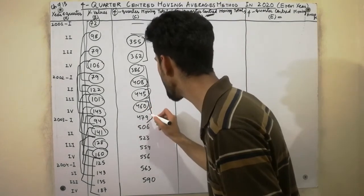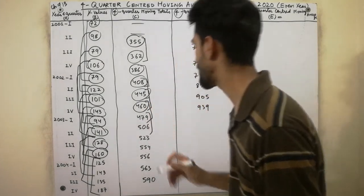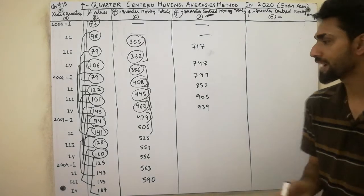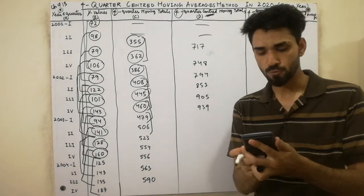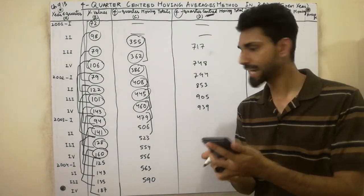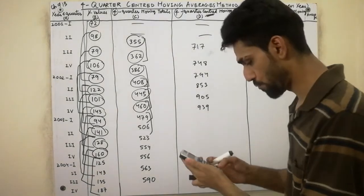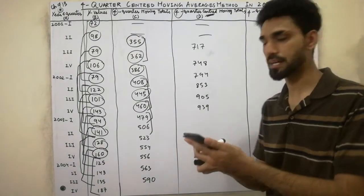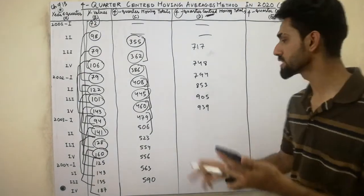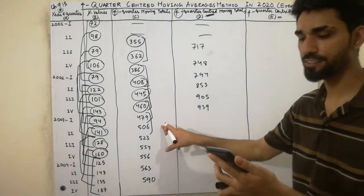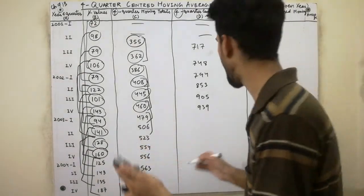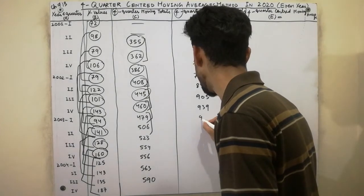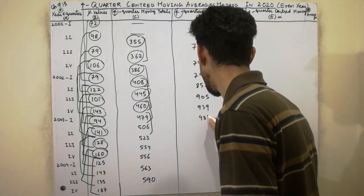Now we leave that value 939, and again next we add up the next two values: 479 plus 506. Very very easy method — 479 plus 506. We get the value 985.